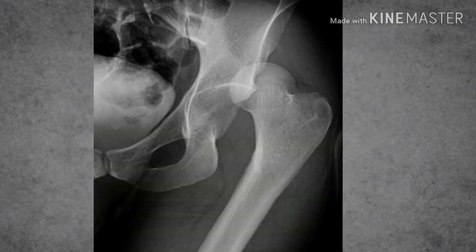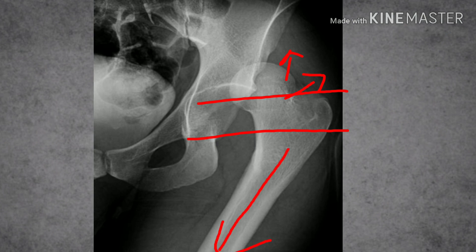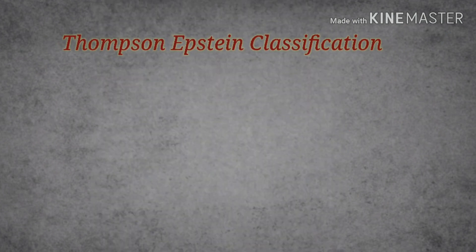In this particular X-ray of posterior hip dislocation, we can see the head of the femur has moved superiorly and posteriorly, and the shaft of the femur is toward the longitudinal axis of the body, indicating the leg is in an adducted position. The Thompson-Epstein classification is used to categorize posterior hip dislocations.